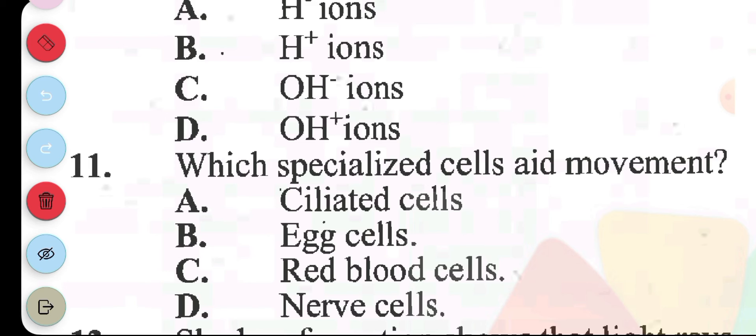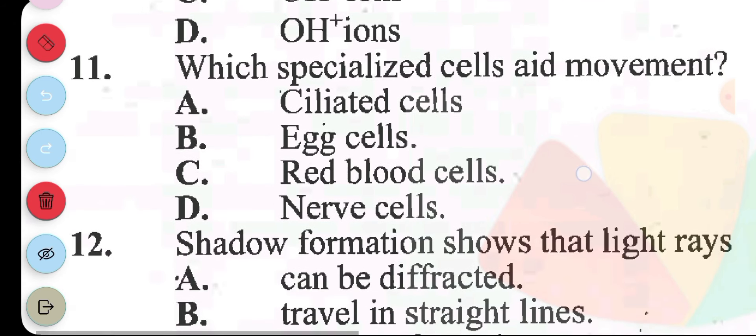Question 11: which specialized cells aid in movement or aid movement? A, ciliated cells. B, egg cells. C, red blood cells. D, nerve cells. The answer to question 11 is A, ciliated cells. They are also known as cilia, helping movement.